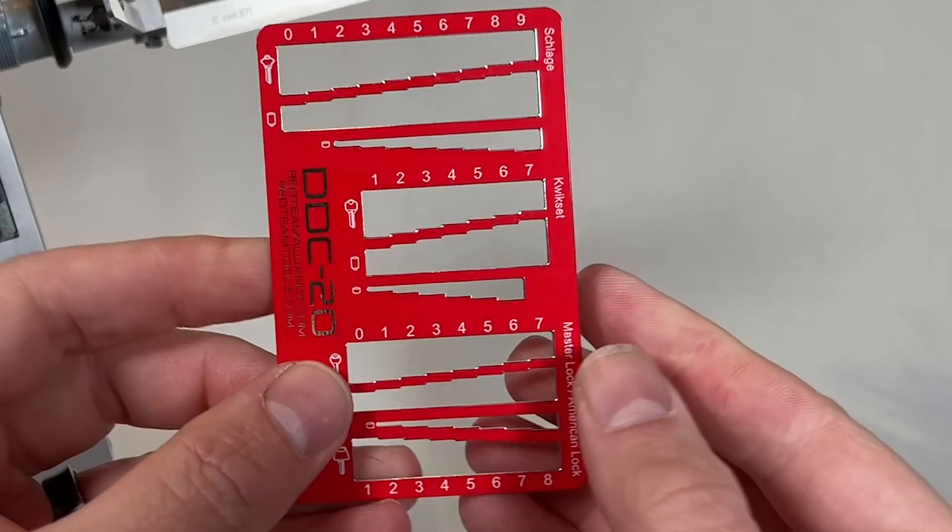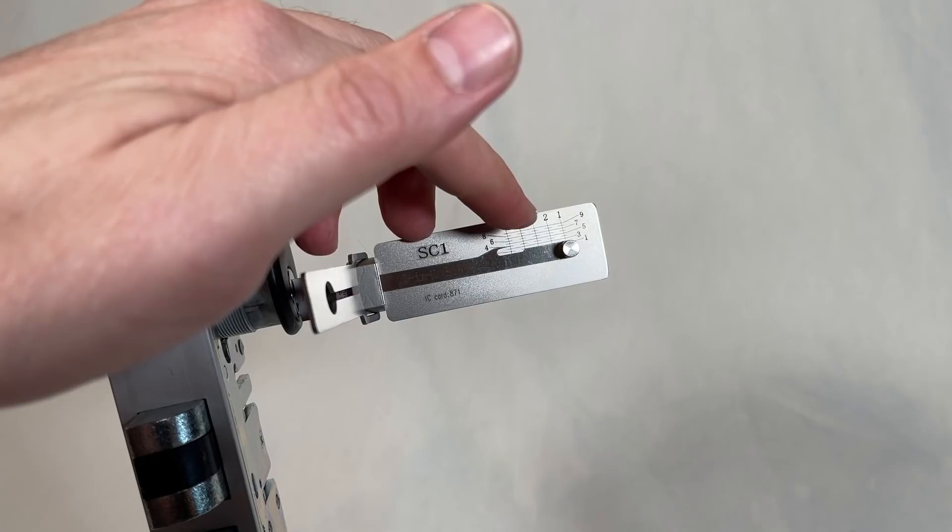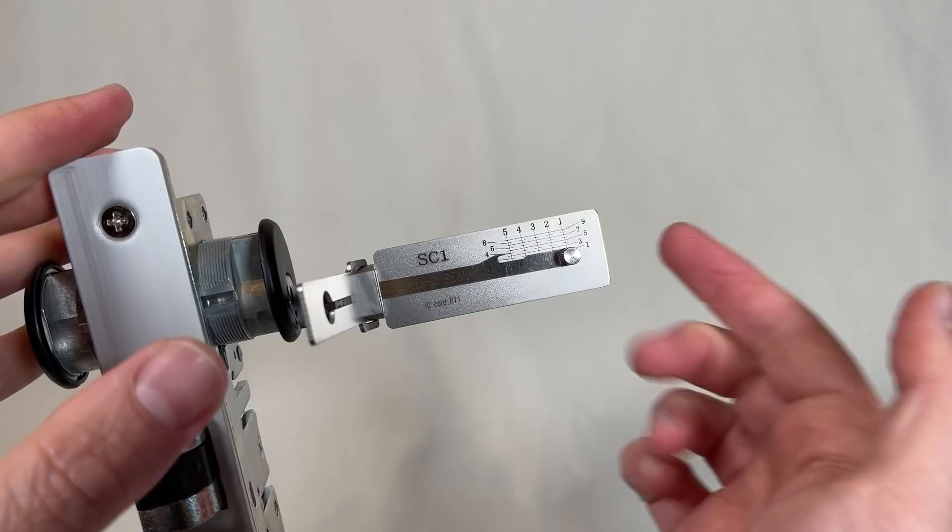And then the last chamber is on three. All right. I think, unless I can't do the maths correctly, the card and the key and the Lishi tool all tell us that this is a four, five, four, two, three.